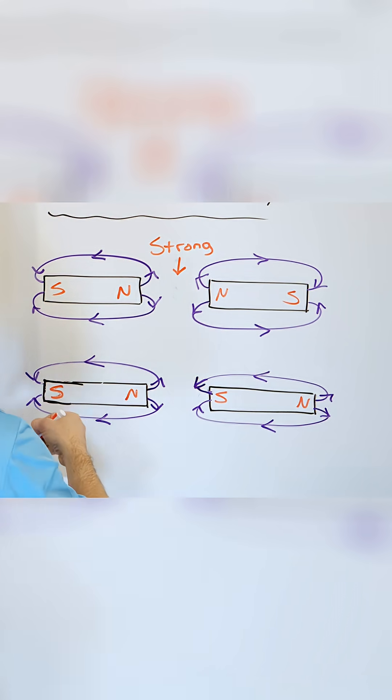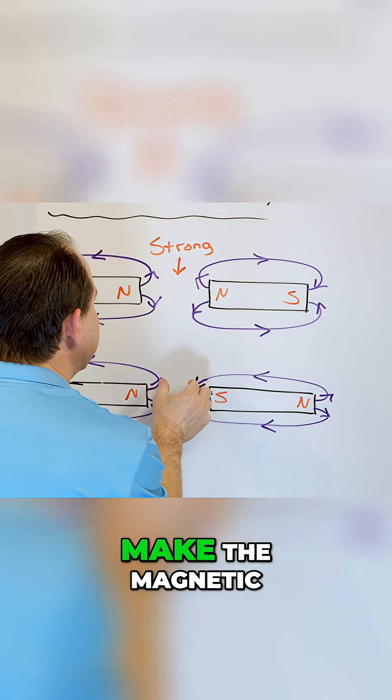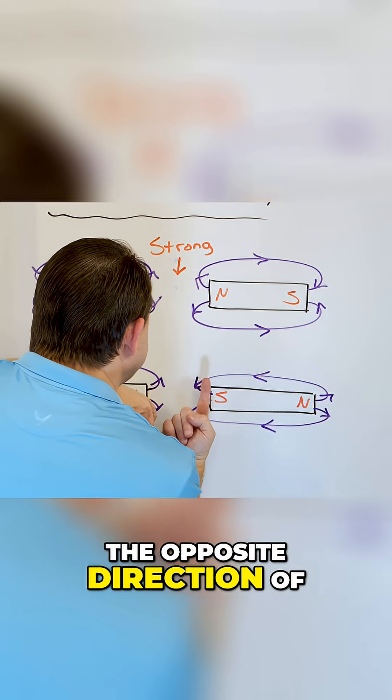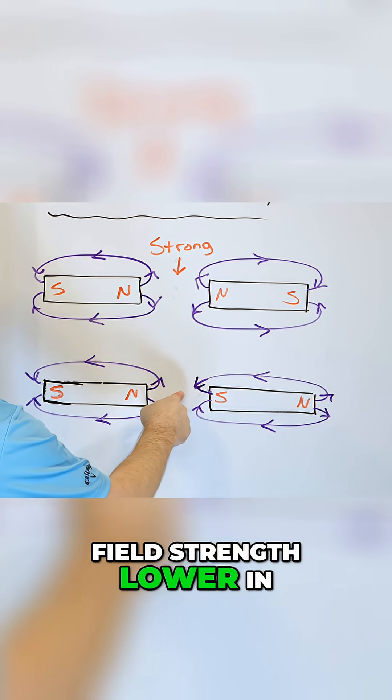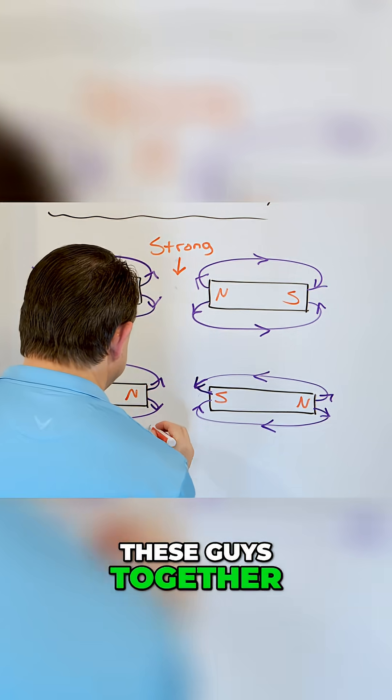As I bring them closer and closer together, what is going to happen? This magnetic field is going to tend to cancel with that one and make the magnetic field strength lower. This one is going to be going opposite direction of this one and it's going to tend to make the magnetic field strength lower in the center here.